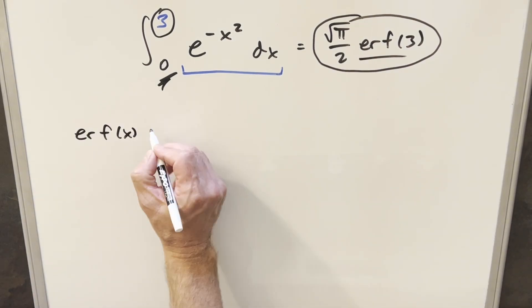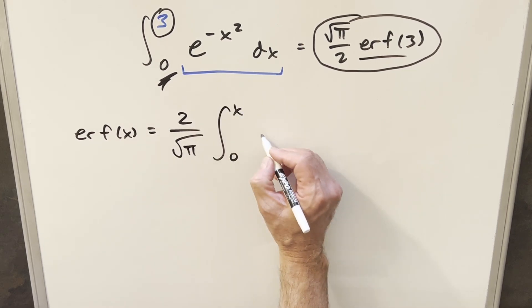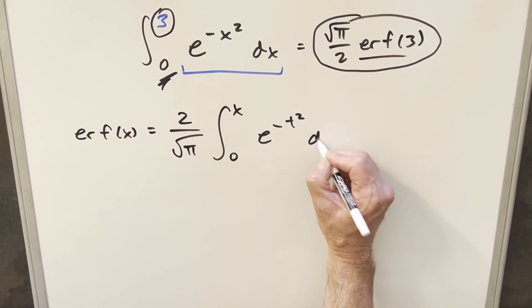Our definition for this is going to be just 2 over square root of pi integral from 0 to x e minus t squared dt.